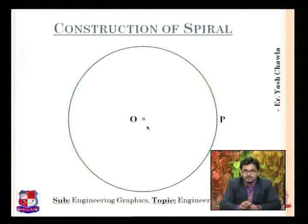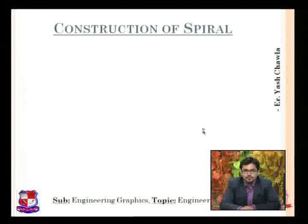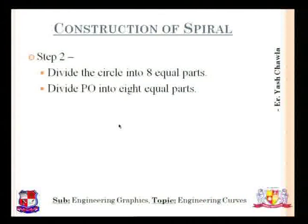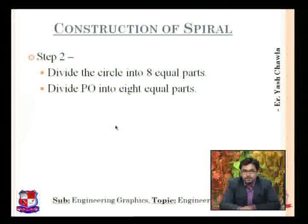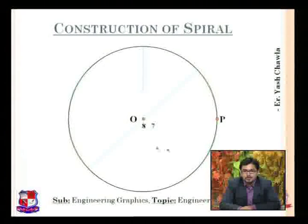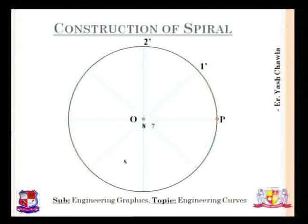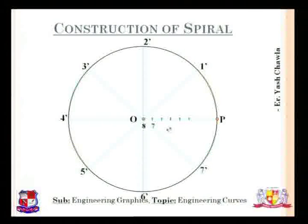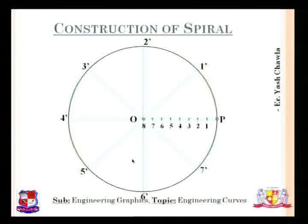The next point is we are going to mark the point P. Then we divide the circle into 8 parts and divide PO again into 8 equal parts. So first the circle is divided into 8 parts, taking the points as dashes, and then dividing PO into 8 equal parts: 1, 2, 3, 4, 5, 6, 7, and 8.